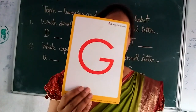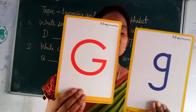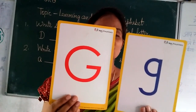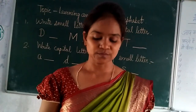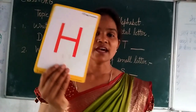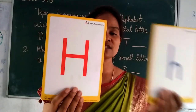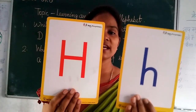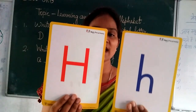Capital G. Small G. G for gun. Capital H. Small H. H for hen.